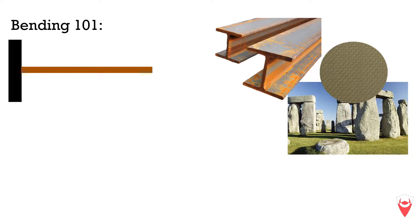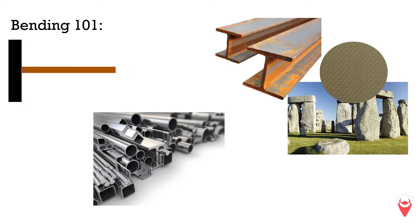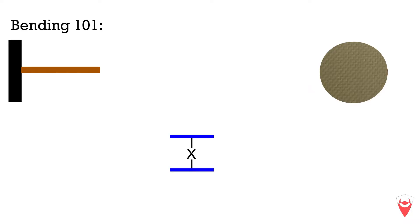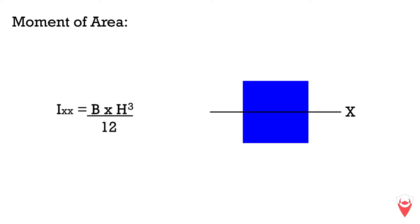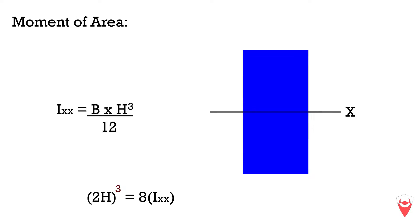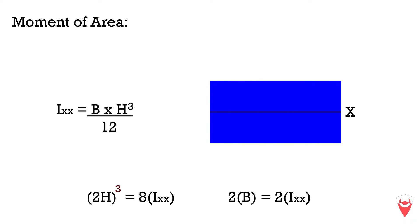The resistance to bending for a beam is a function of the length, the Young's modulus or material, and the moment of area or shape of the beam. We're going to fix the length and material and focus on the moment of area by adjusting the distance between two skins. The moment of area for a rectangular cross-section about its axis is defined as width times height cubed divided by 12. The height cubed is the dominant variable — if you double the height you increase stiffness by eight times, but if you double the width you only increase it by a factor of two.